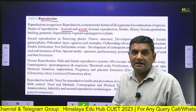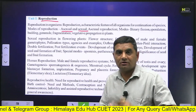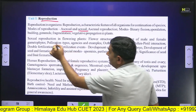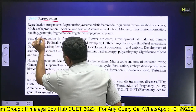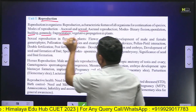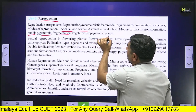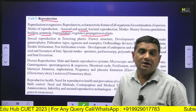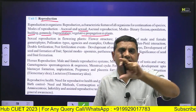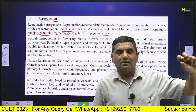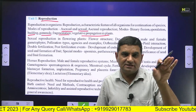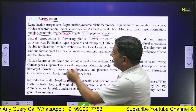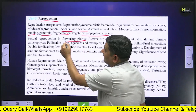We will discuss different modes of asexual reproduction such as binary fission, budding, fragmentation, and vegetative propagation in plants. We will solve question series on these topics, and then move on to sexual reproduction and flowering plants.